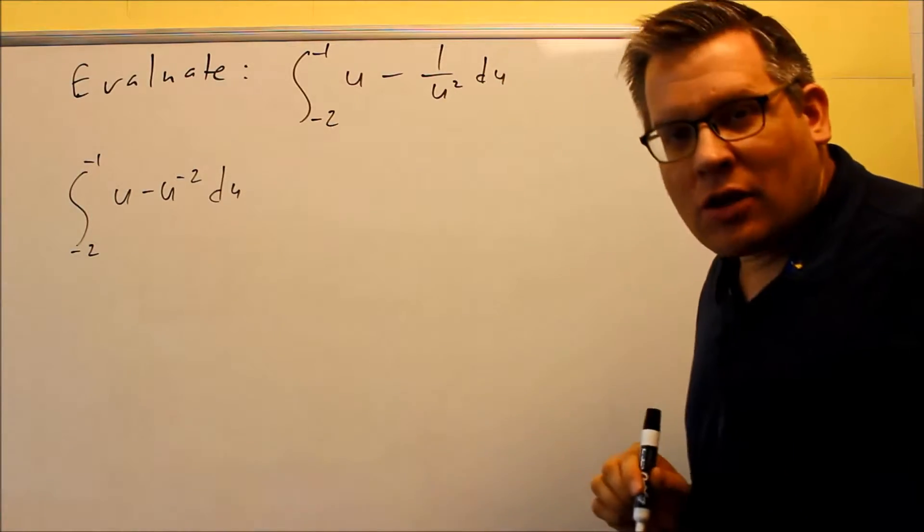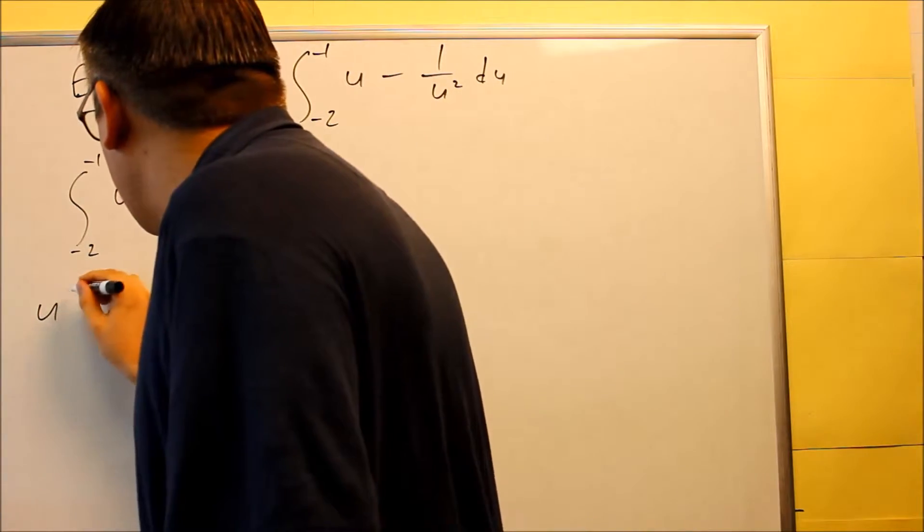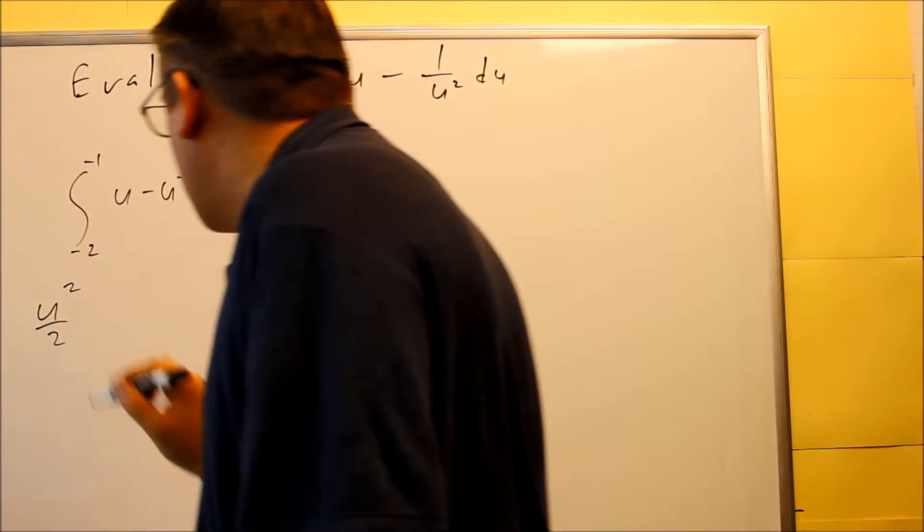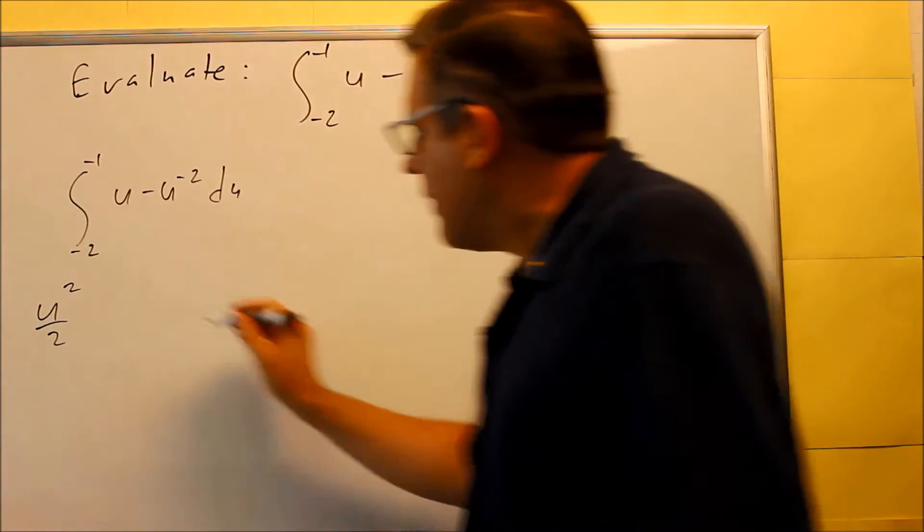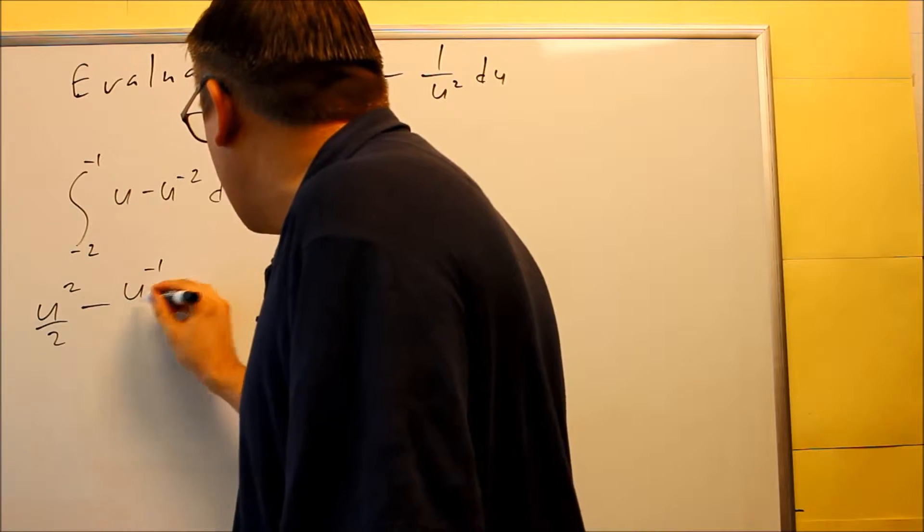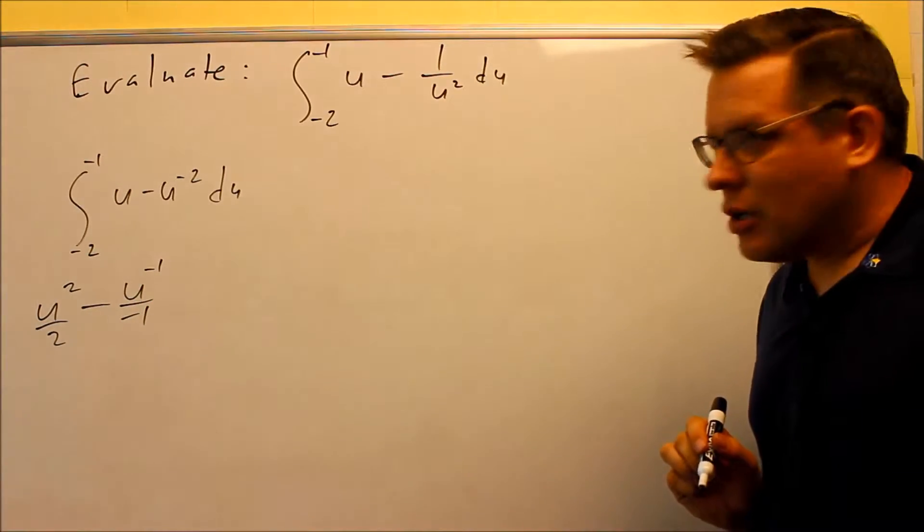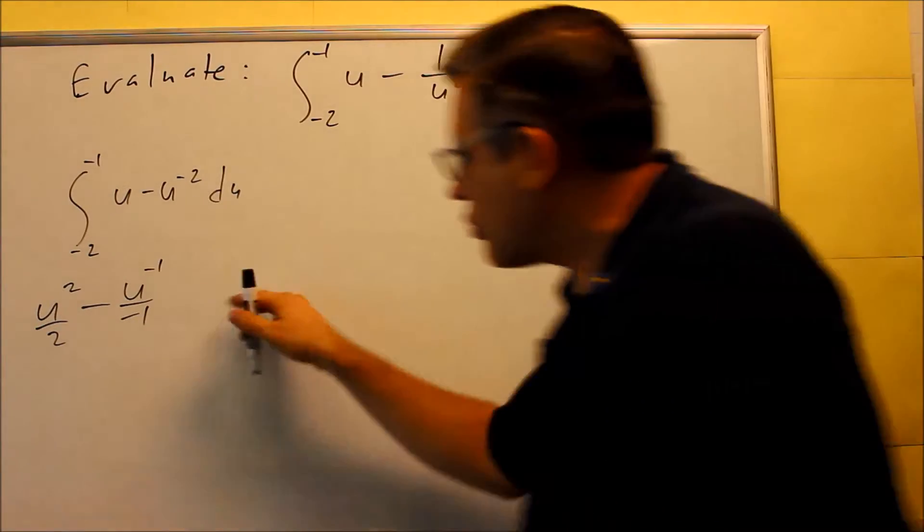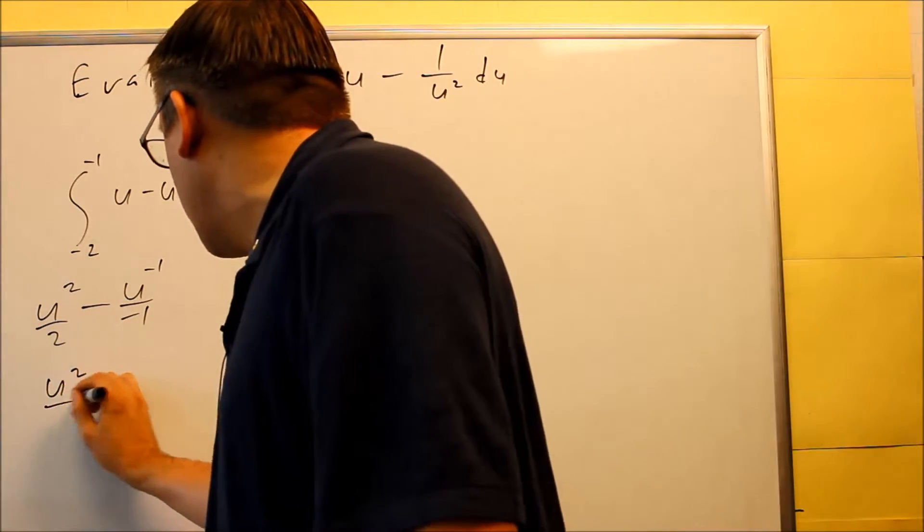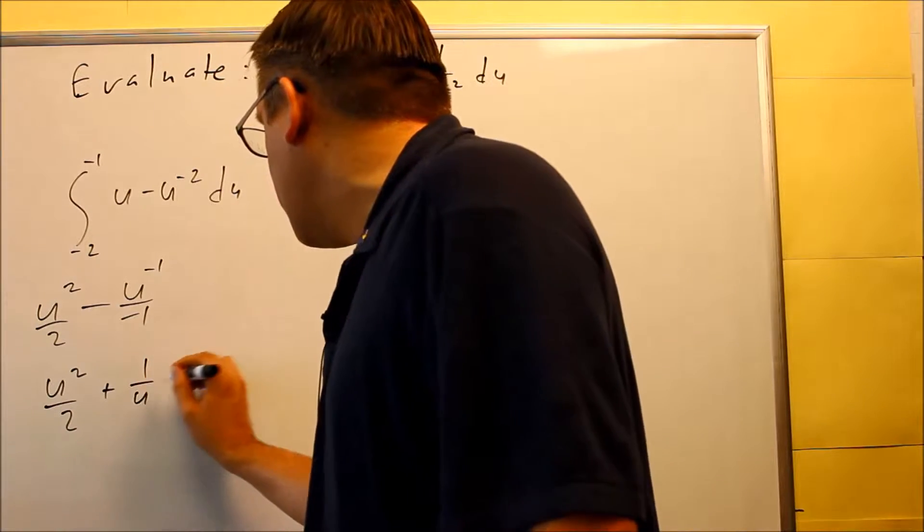Now we're ready to find the antiderivative using the inverse power rule. Raise the power by 1, divide by new power, so u squared over 2. Next, you get this, raise the power by 1, you get u negative 1 over negative 1. We're going to simplify this: u squared over 2, negative negative gives you a plus, so plus 1 over u.